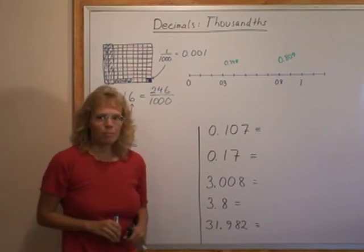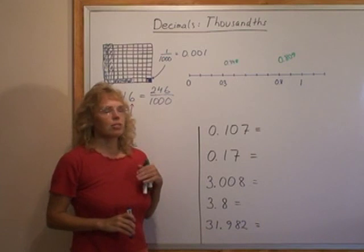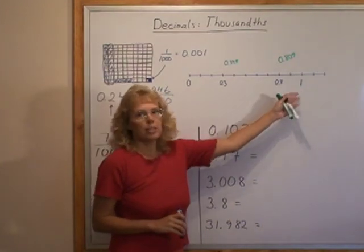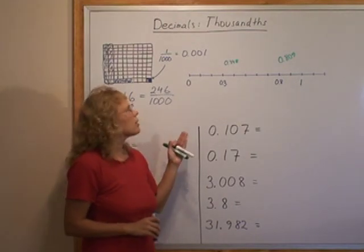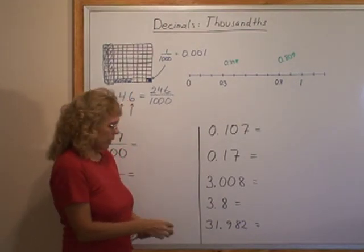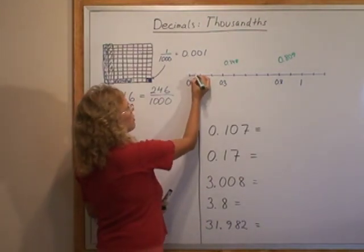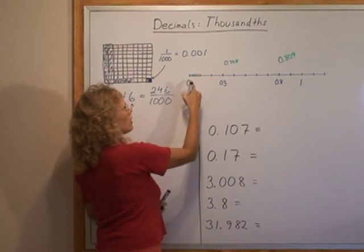Now also on a number line it becomes much more difficult now to illustrate thousandths. My number line goes from zero to one and it's already divided into ten parts or tenths, and then the next step would be to divide it into hundredths. So I take one of these and divide it into ten new parts.